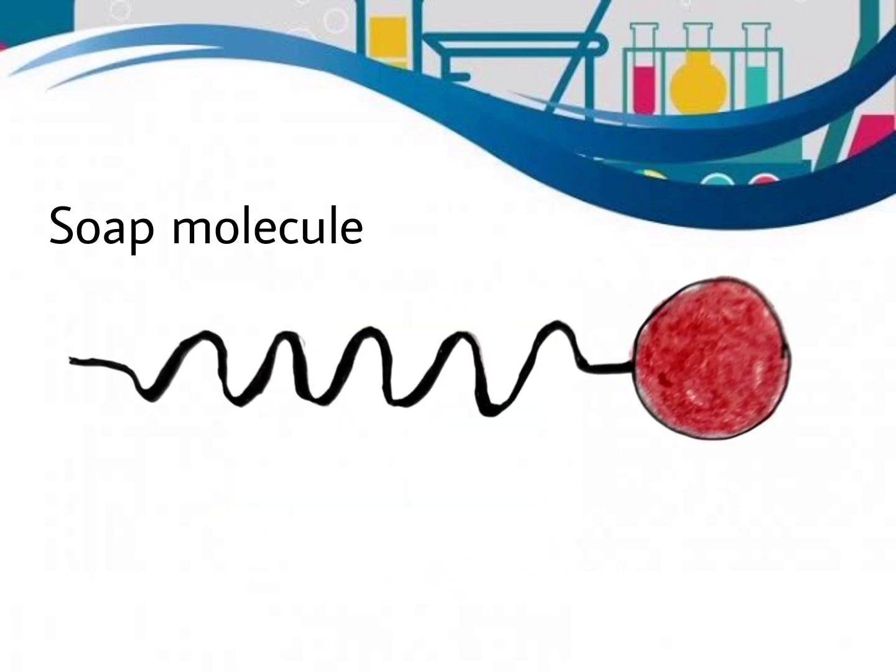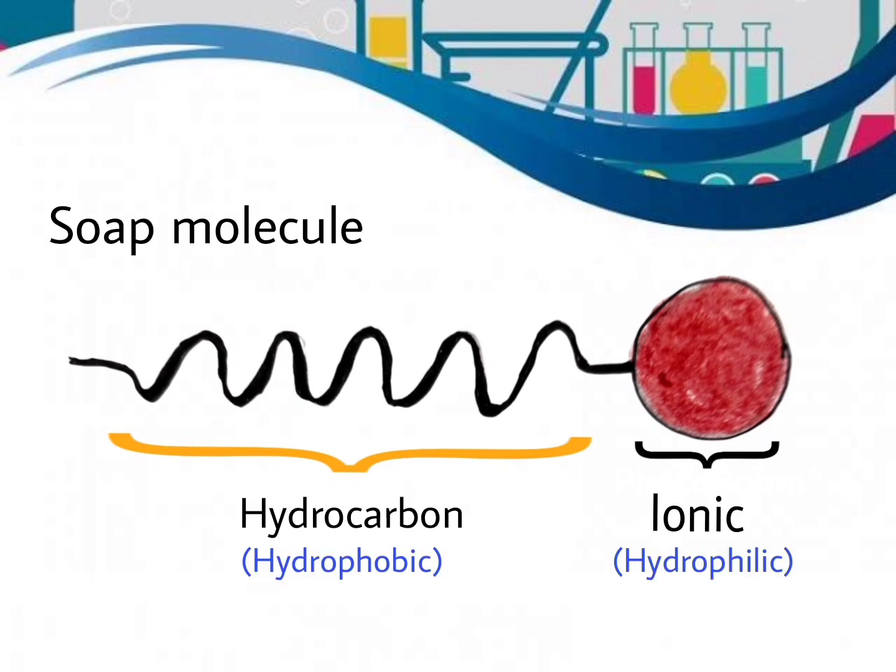Here is the structure of a soap molecule. The soap molecule has a long hydrocarbon chain and short ionic end. The hydrocarbon chain is non-polar and hydrophobic, whereas the ionic end is hydrophilic and contains negatively charged carboxylate anion.